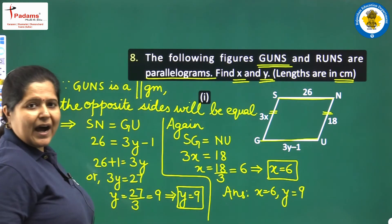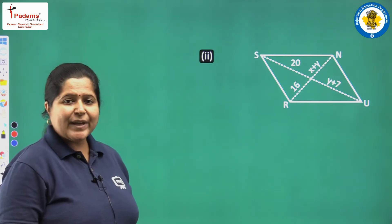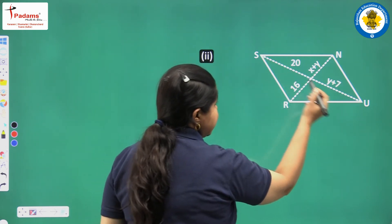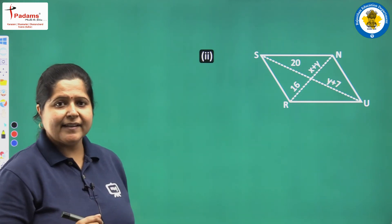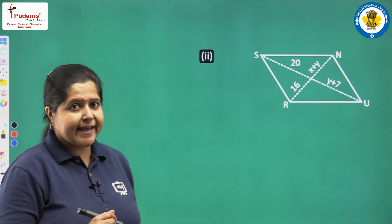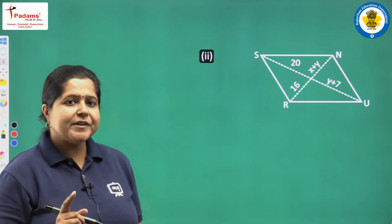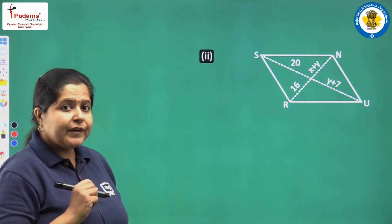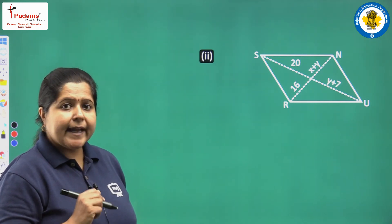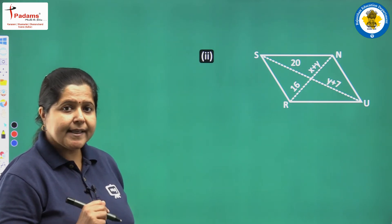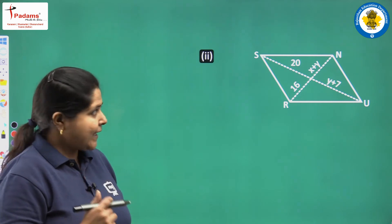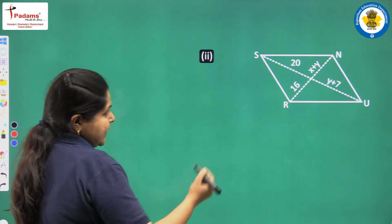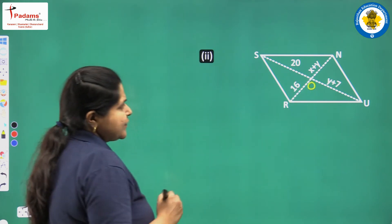Next we have the second part of question 8, parallelogram RUNS. The lengths of corresponding parts of each diagonal have been given. Here we apply the property that the diagonals of a parallelogram bisect each other — they divide each other into two equal parts. Let us mark the point of intersection of the diagonals as O.